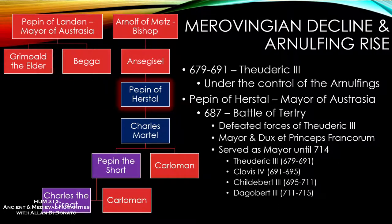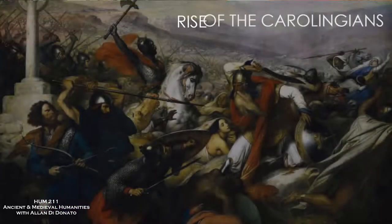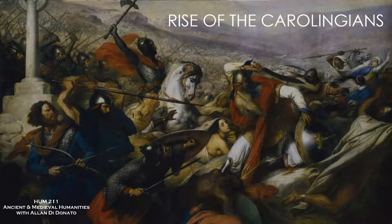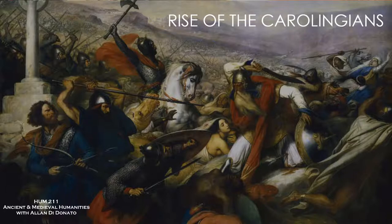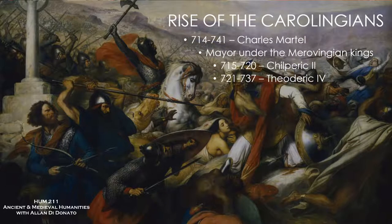He had a long career as the man behind the power — all of these kings were basically do-nothing kings. With his death came division and civil war, not unusual. The man who emerged as the next real power behind the throne was his illegitimate son, Charles Martel — a name you may have heard of.